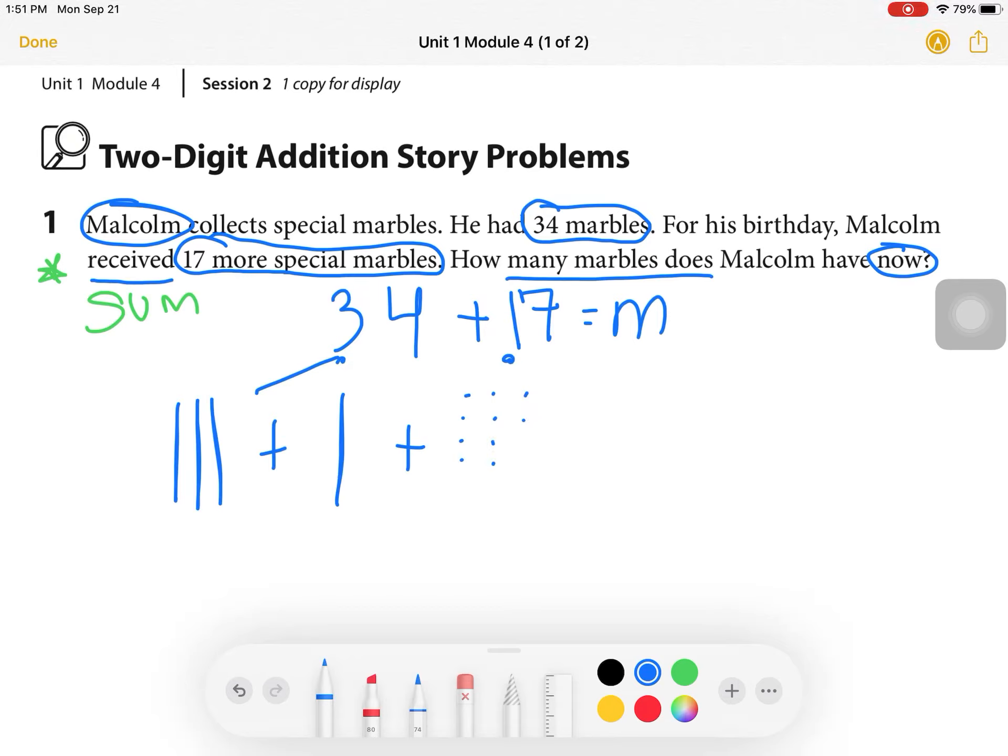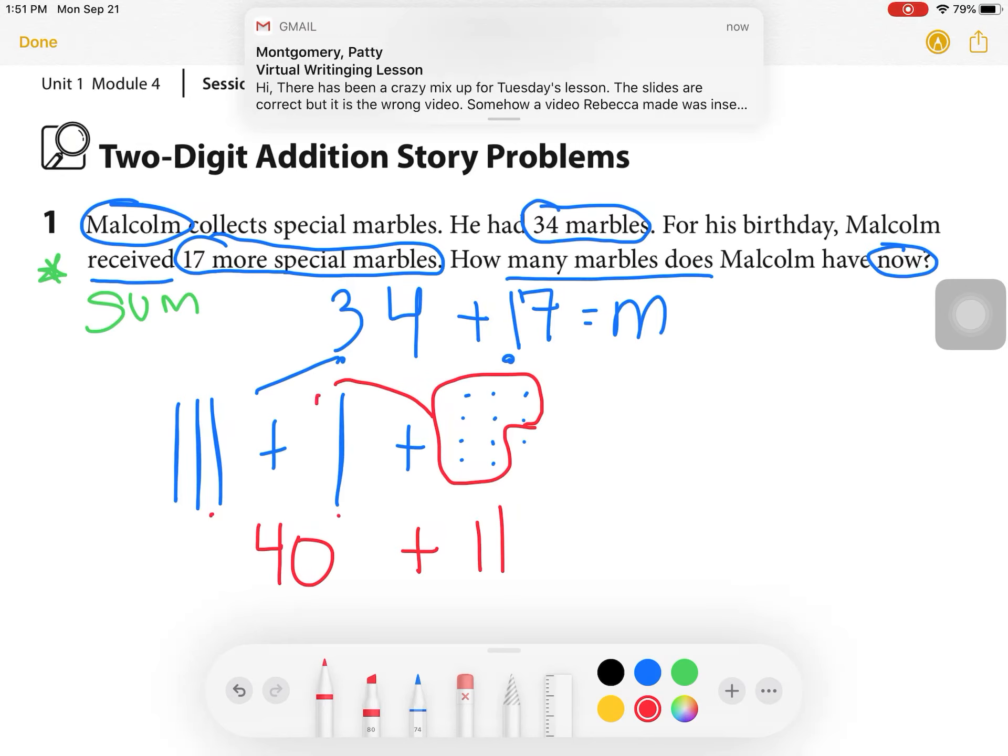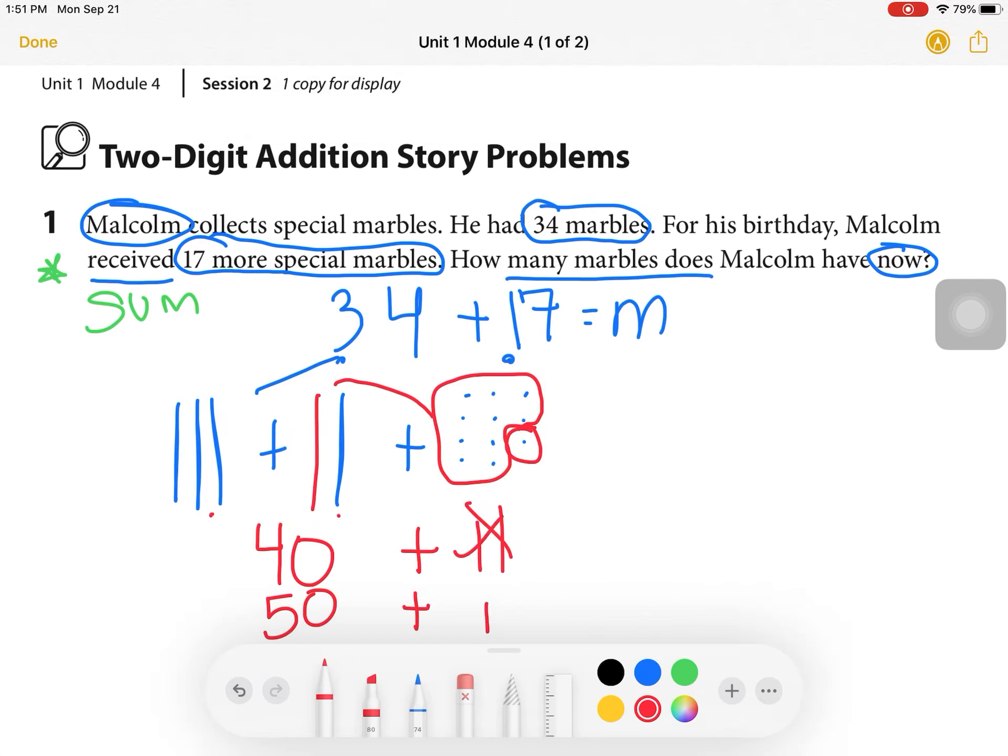So I could take this and say, all right, I know this is going to get me to 40, which is three 10s plus one 10. And then I've got 11 over here. So I could take this and do 11. Or I can regroup this and say, I've got 10 dots and move this 10 over here. And now I have 50 plus the one dot that's left over, which I took and moved over here. And now I've made it 51.